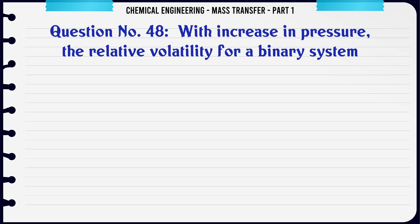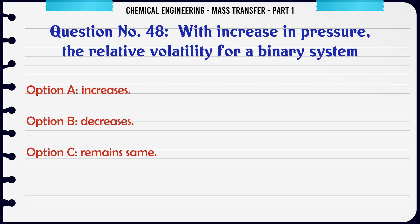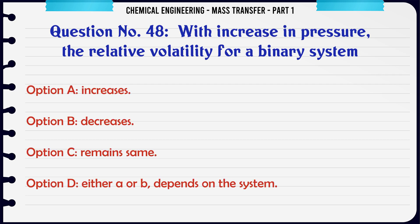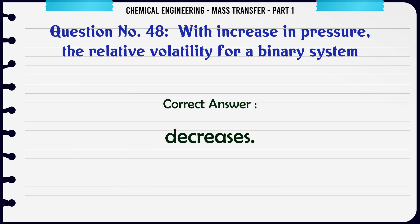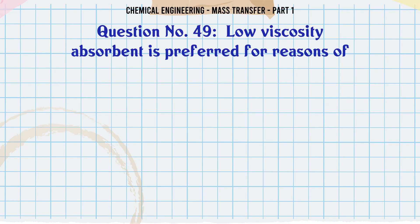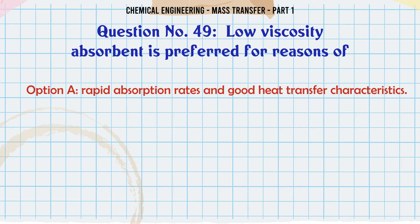With increase in pressure, the relative volatility for a binary system: A. Increases. B. Decreases. C. Remains same. D. Either A or B depends on the system. The correct answer is Decreases.